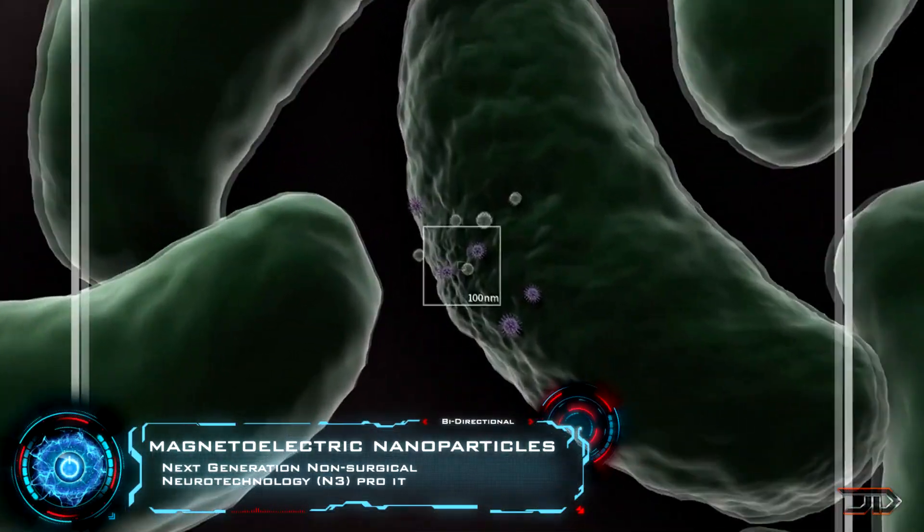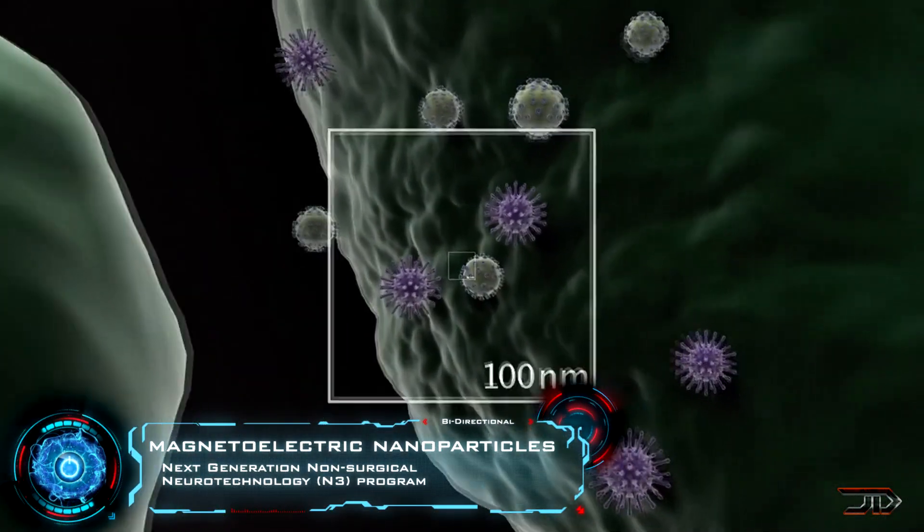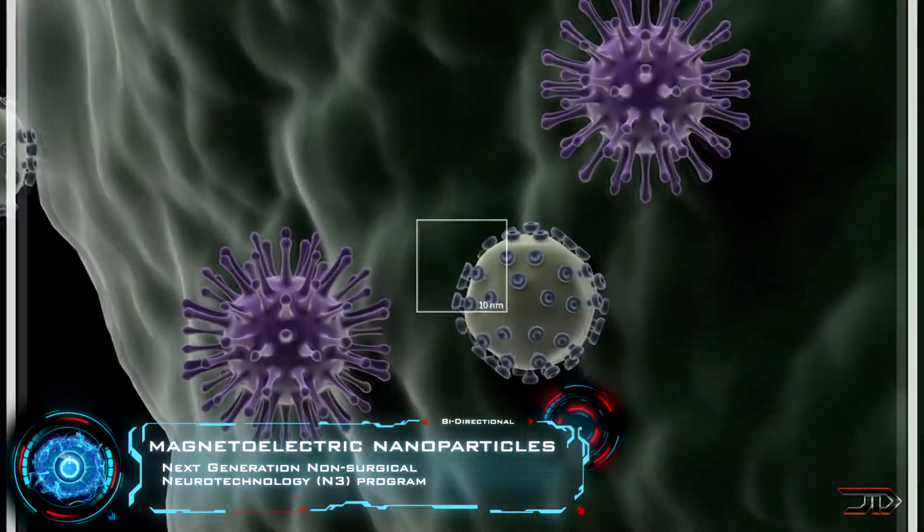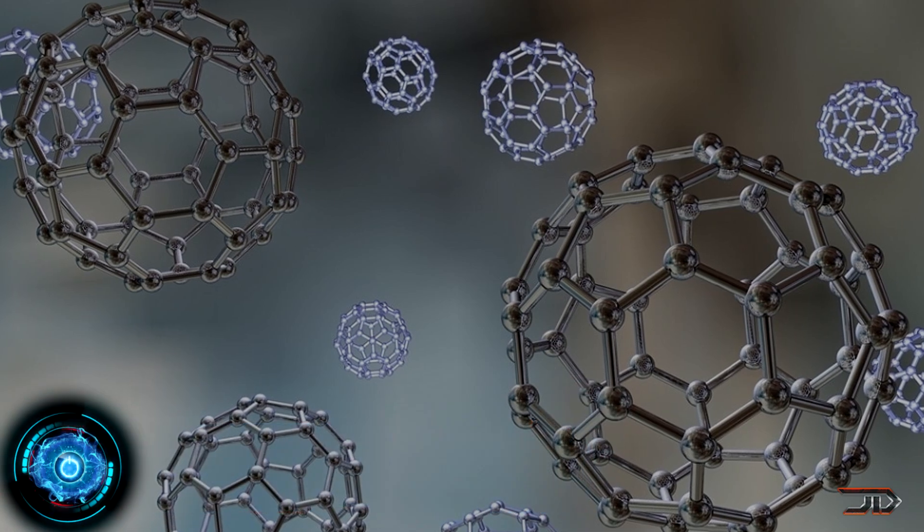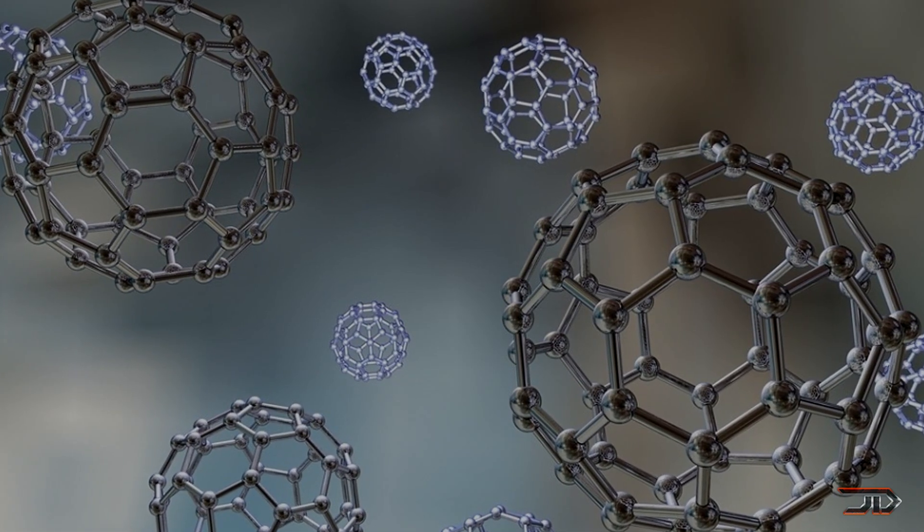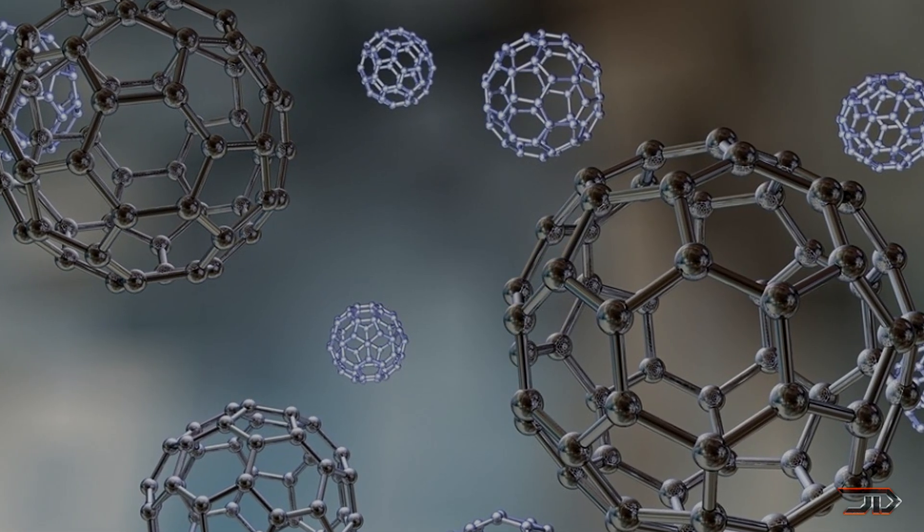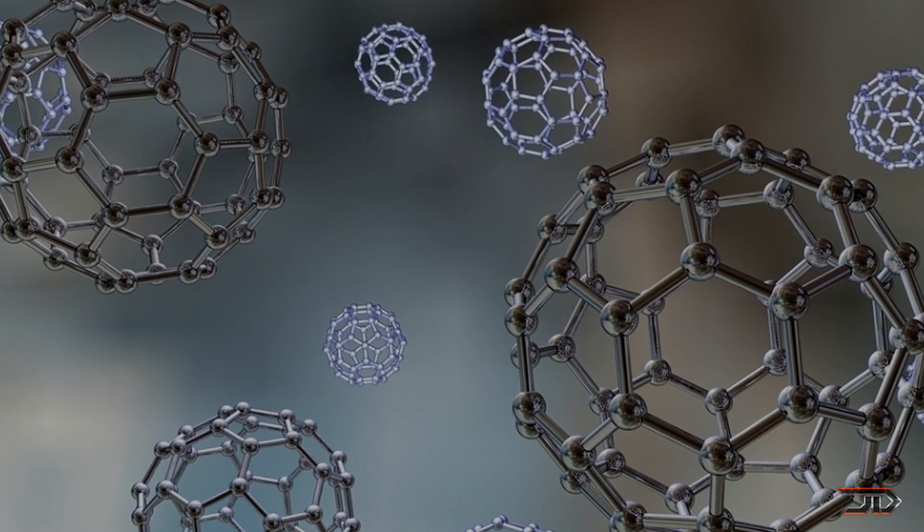One exciting development inside this program utilizes nanoparticles. These magnet-electric nanoparticles are able to be injected into the brain, and they can be positioned by neurons in order to be stimulated with a magnetic field. A special helmet would be worn by the user, and this helmet would communicate with these particles in real time.